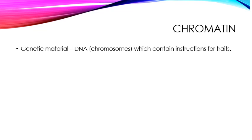Chromatin is the general form for genetic material. So DNA or chromosomes is chromatin. It contains the instructions for traits. It is that genetic or hereditary information.